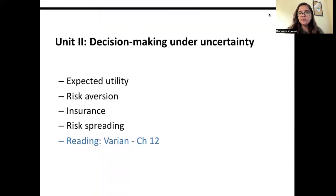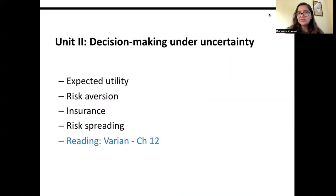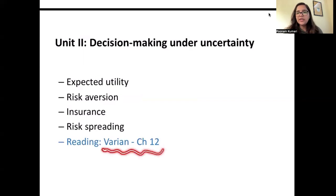Unit two is decision making under uncertainty. If multiple options are given and you don't know which one will actually occur, how does a consumer make decisions, and how can they protect themselves from uncertainty? We will cover the concept of expected utility, types of risk preferences — whether people are risk-loving, risk-averse, or risk-neutral — and instruments people use to reduce risk, such as insurance and risk spreading. The reference for this will be Varian chapter 12.